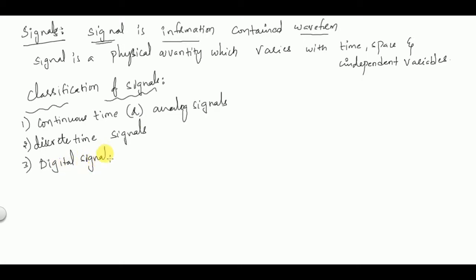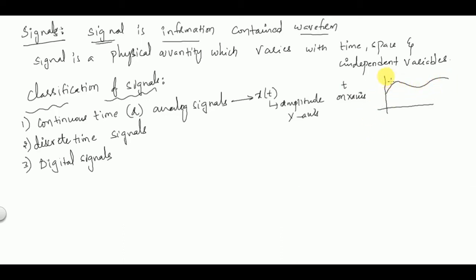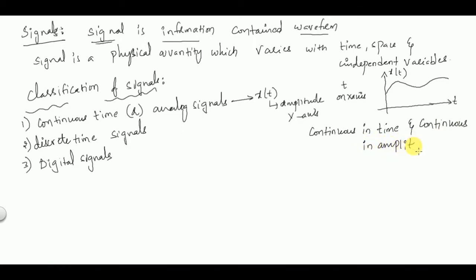Continuous time signals are generally represented as x(t), where x(t) represents amplitude on the y-axis and t on the x-axis. Any continuous time signal is continuous in time and continuous in amplitude. Any signal which is continuous in time and continuous in amplitude is called a continuous time signal, or analog signal.